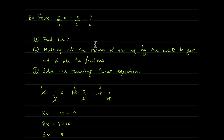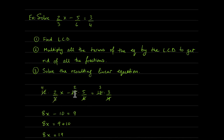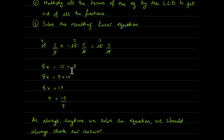We find the LCD of the denominators, then multiply every single term of the equation by that LCD. So two-thirds x gets multiplied by 12, five-sixths gets multiplied by 12, and three-fourths gets multiplied by 12. This lets us cancel all the denominators: three goes into 12 four times, six goes into 12 twice, and four goes into 12 three times, leaving us with a linear equation.